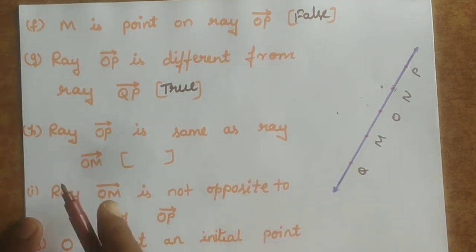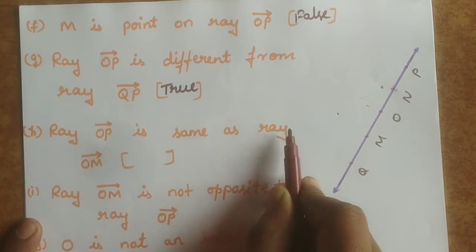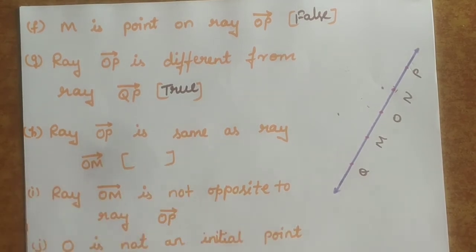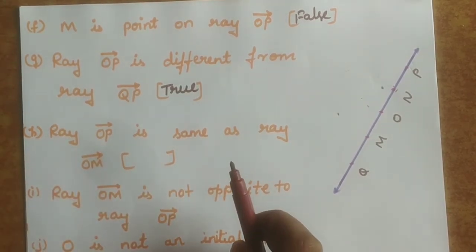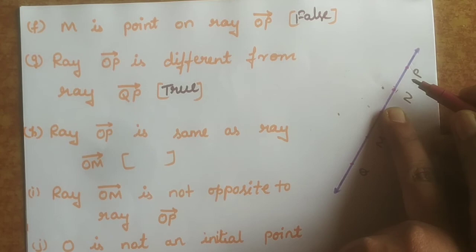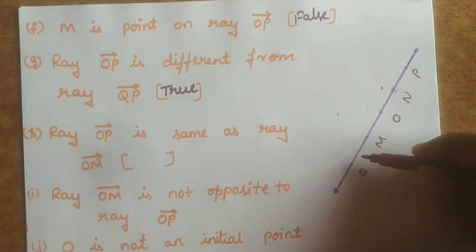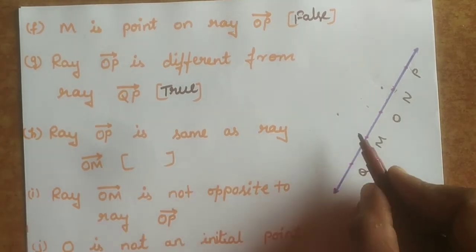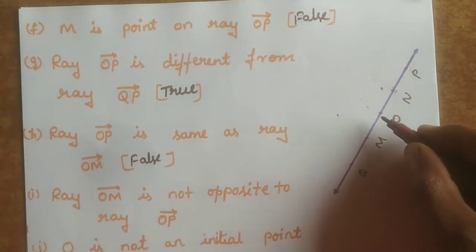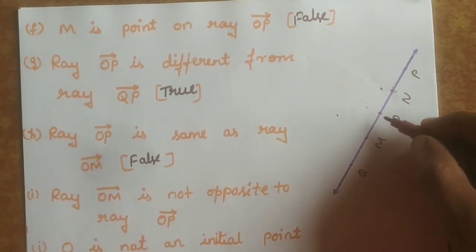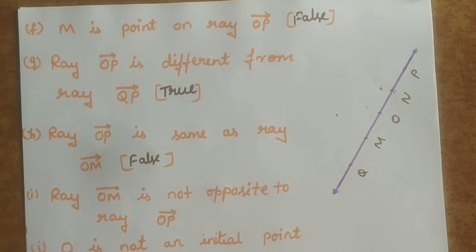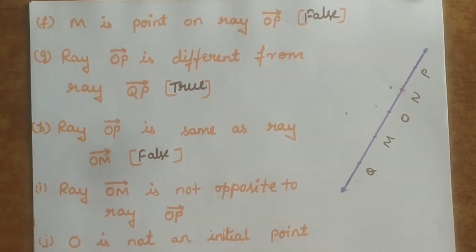Statement H: ray OP is the same as ray OM. OM is one ray with end points O and M, and OP is a different ray with end points O and P. They are different rays, so the statement is false.